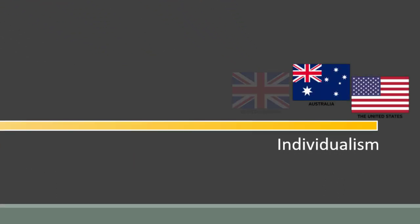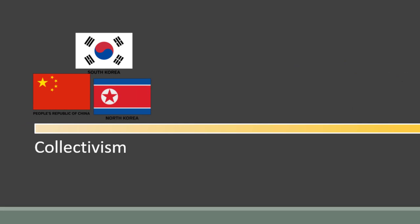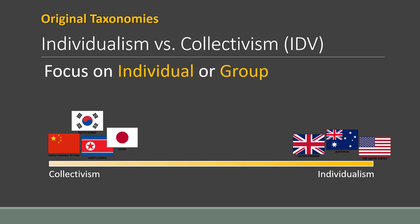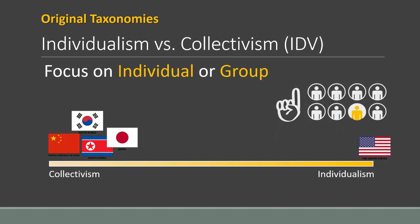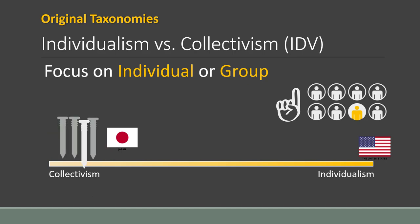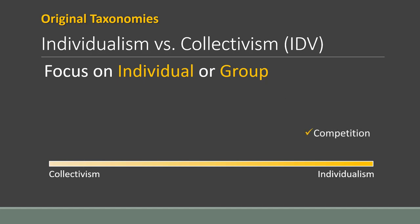In the United States, Australia, and the UK, individual needs tend to be valued over group needs, while in many Asian cultures like China, Korea, and Japan, the needs of the group are more important than the needs of the individual. In the United States, you'll hear clichés like 'looking out for number one' or 'dare to be different,' while in Japan a cliché is 'the nail that sticks out gets pounded down,' as a reminder to not stand out. In individualistic cultures, the name of the game is competition, while in collectivist cultures the focus is on being helpful, dependable, and focused on the needs of others.